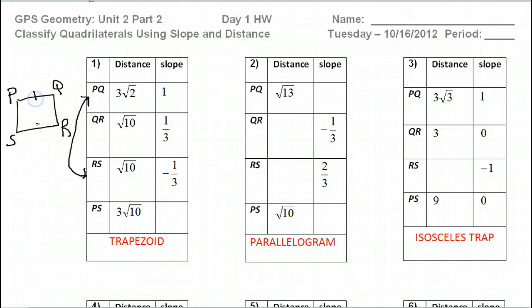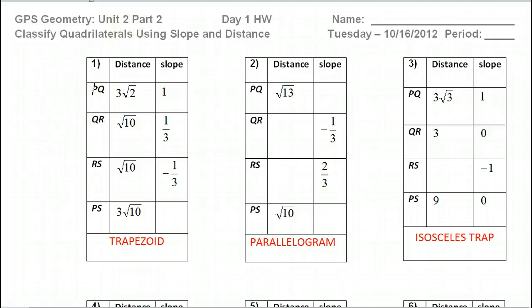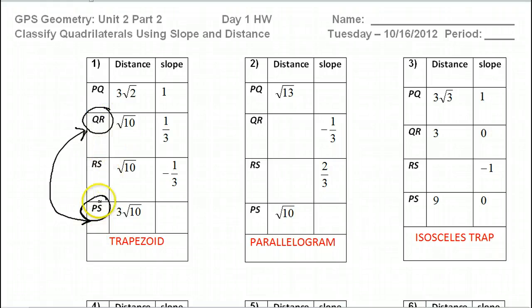So PQ and RS would be opposite sides. The point is, even looking at this chart, if you skip a row, you're looking at opposite sides. PQ and RS are opposite sides — they are not parallel, which means that QR and PS must be the parallel pair. Something has to be parallel in a trapezoid, and this is the only one left open. So PS must have a slope of 1/3 to match QR. That's the only way this is going to be a trapezoid.